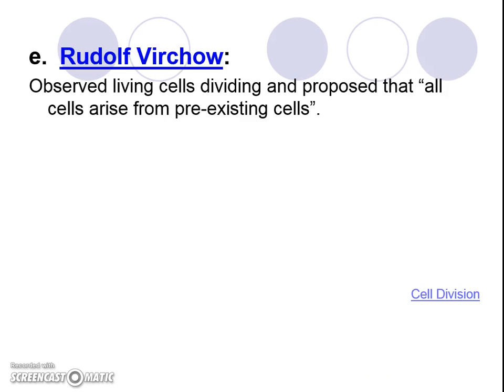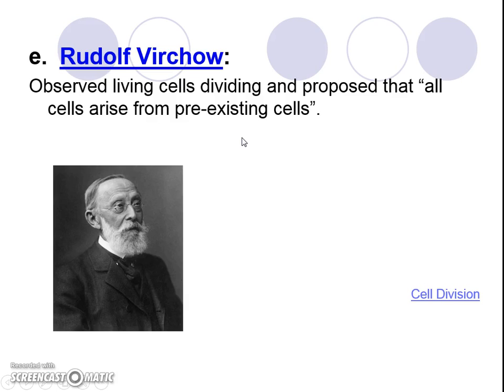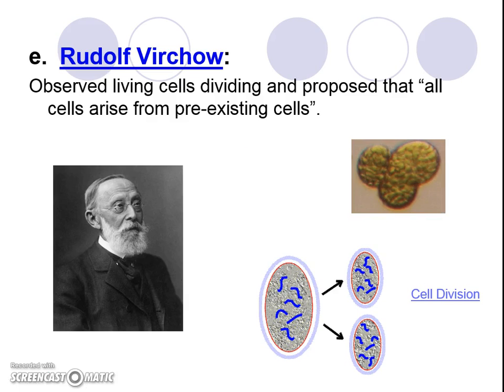And then this guy, Rudolf Virchow, he says, well, maybe it's not just that things are made of cells — maybe cells are the basic unit of everything. Maybe cells don't come into existence from nothing; they must come from other cells through cell reproduction. And he called it: 'all cells arise from pre-existing cells.' That's really about cells dividing — cell reproduction — which is how we grow, which is how single-celled creatures make babies. It's amazing that this guy was able to come up with this on his own.